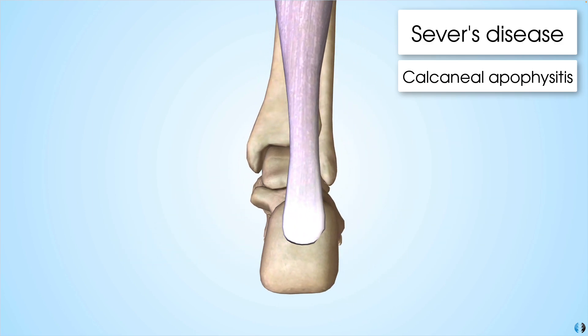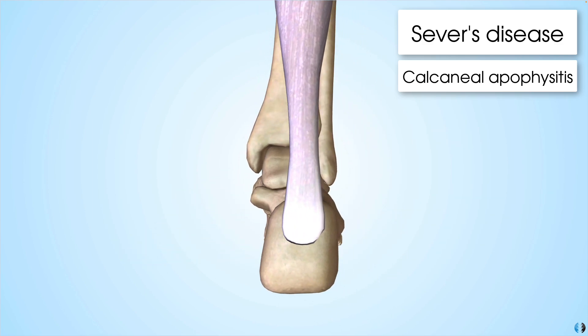A contributing factor is also increased impact forces on the calcaneus, perhaps through activities like jumping. Sever's disease most commonly occurs in children between the ages of 8 and 15 years of age, and represents between 2 and 16 percent of all MSK cases in a paediatric clinic.